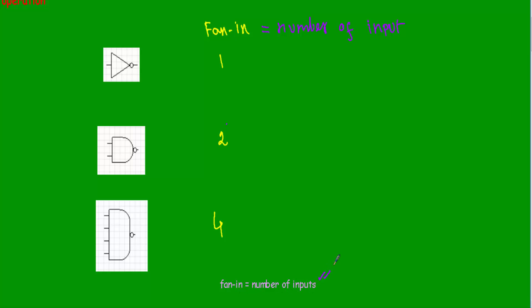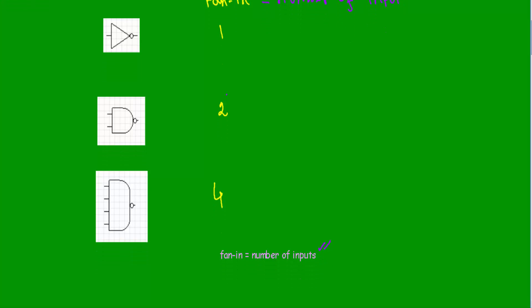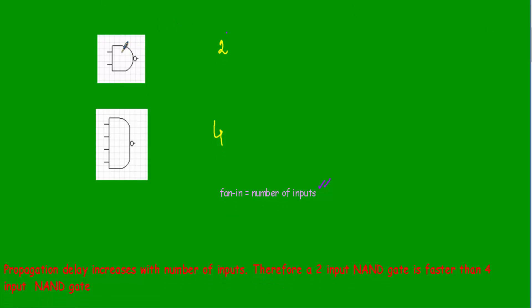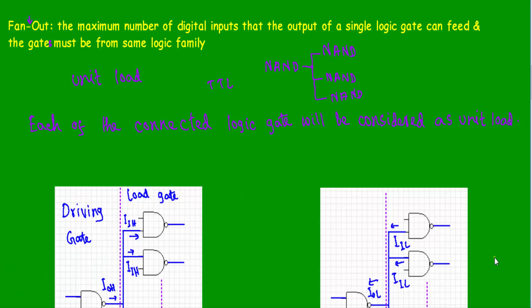There is a problem that arises when we increase the number of fan-in. The propagation delay of logic gates increases with the number of inputs. Therefore, the operation of a two-input NAND gate will be faster than that of a four-input NAND gate.